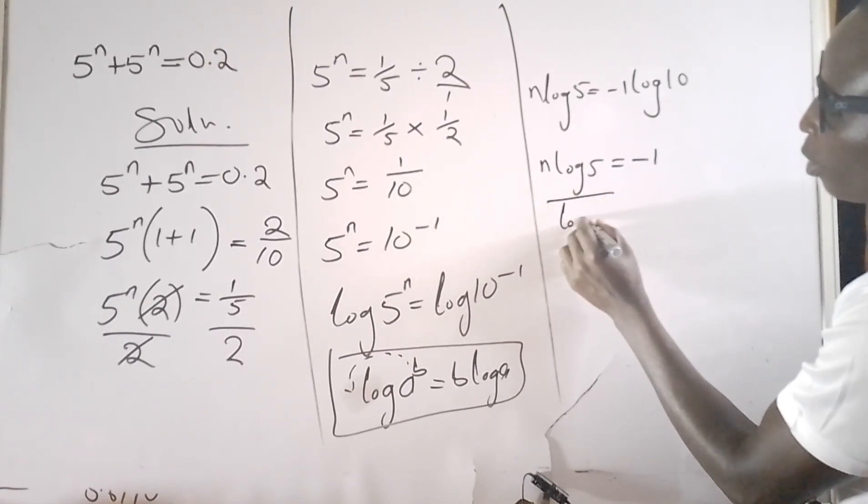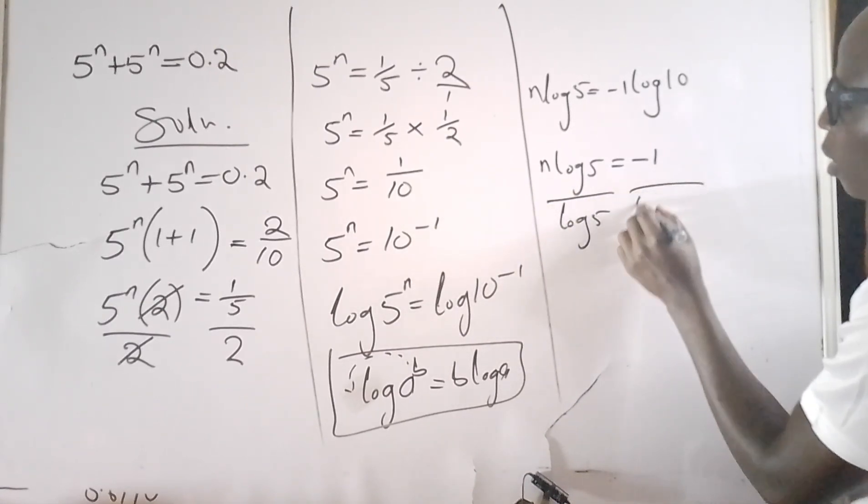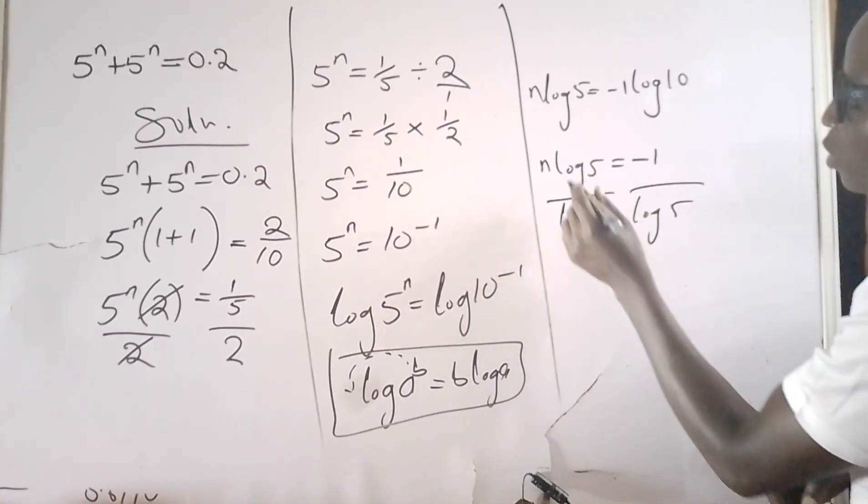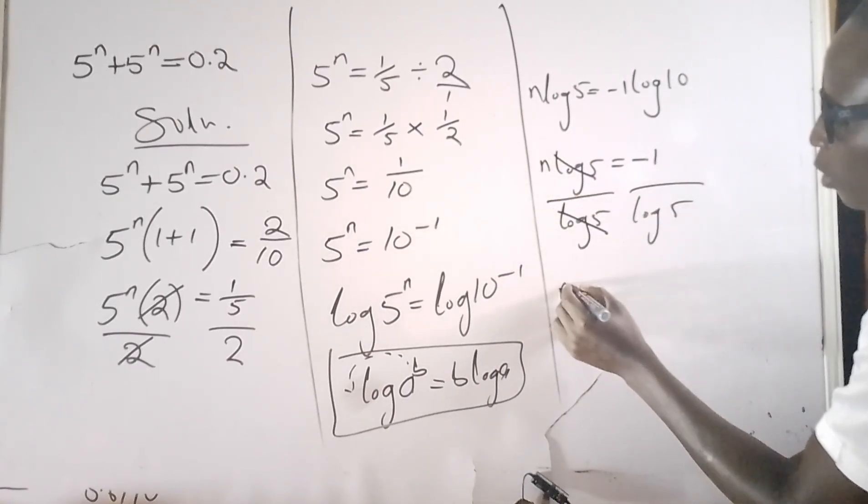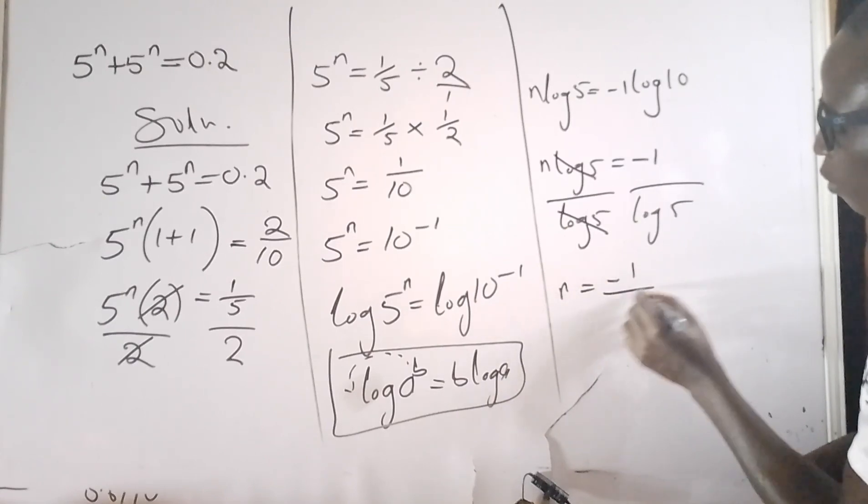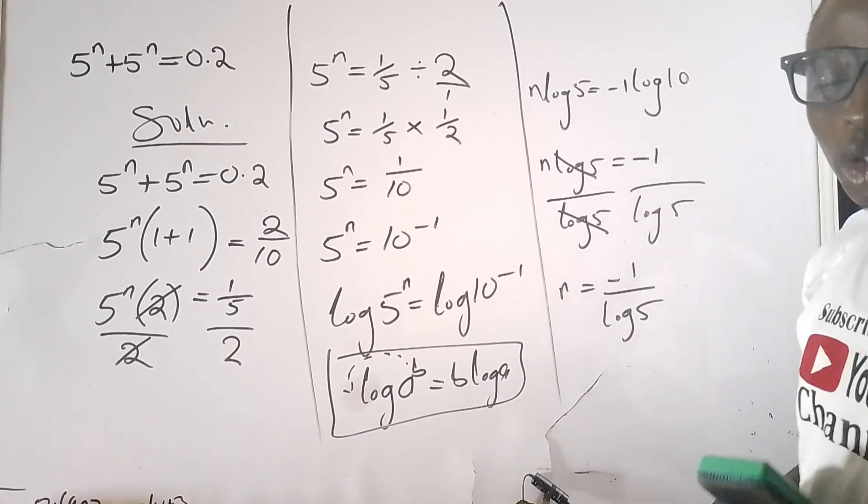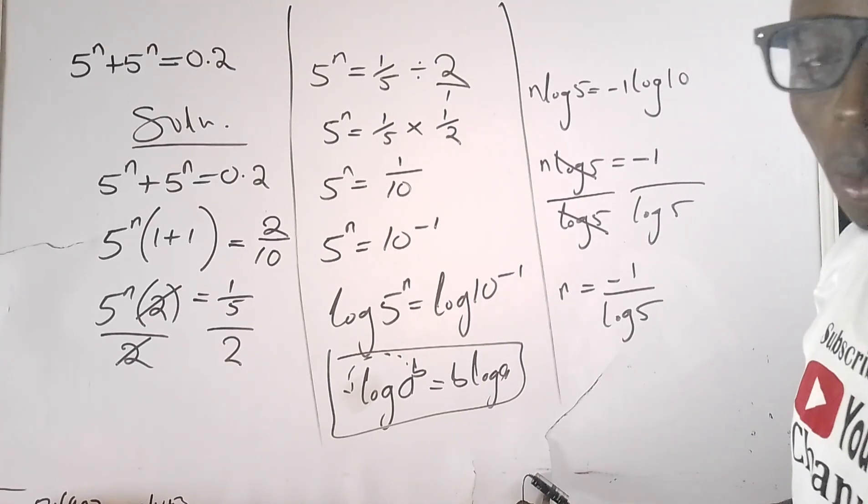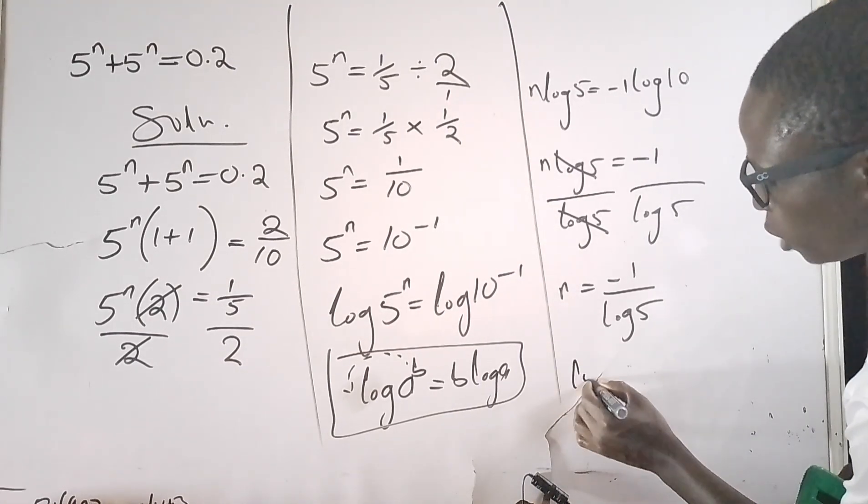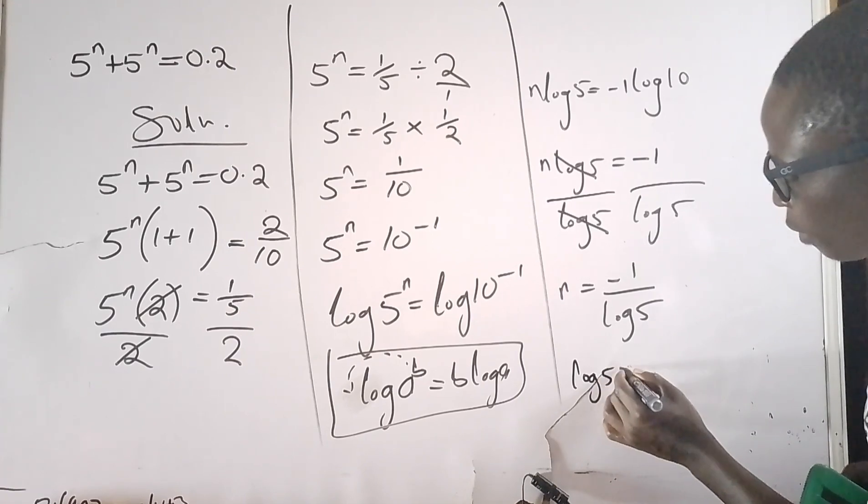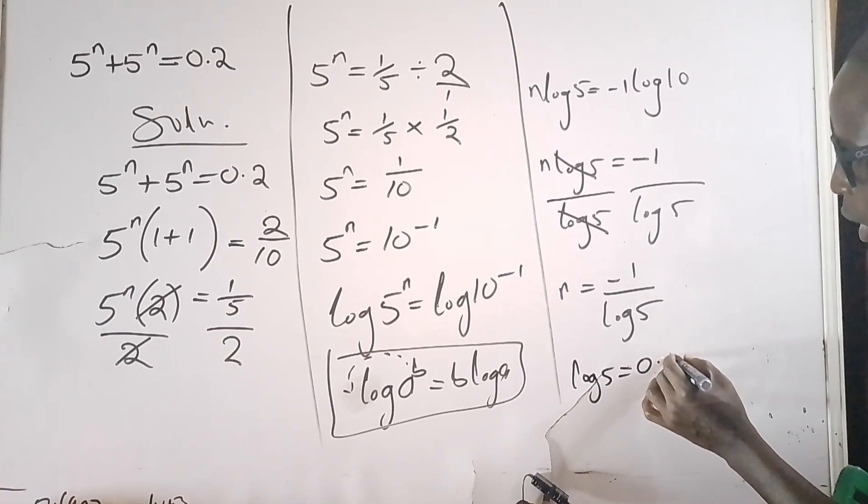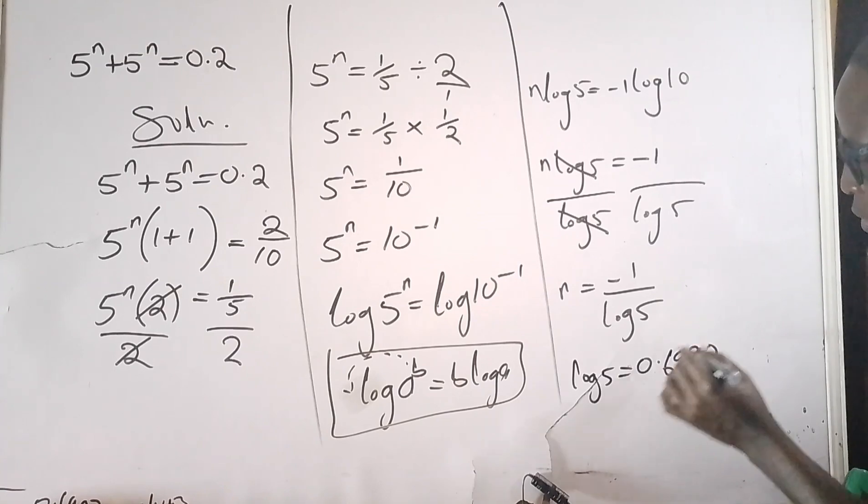I'm looking for n, so I need to divide both sides by log(5) so that this log(5) will cancel. n is now equal to -1 over log(5). But remember that when we press our computing machine, we'll get to know that log(5) equals 0.6990.